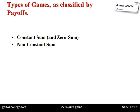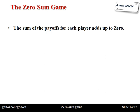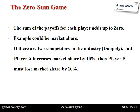Of all the types of configuration of games, probably the most famous is the zero sum game — where whatever one wins, the other loses. The sum of the payoffs for each player adds up to zero. An example is market share. If there are two competitors in the industry — which we call a duopoly — if player A increases market share by 10%, then player B must lose market share by 10%. What one gains, the other loses. It's a zero sum situation.